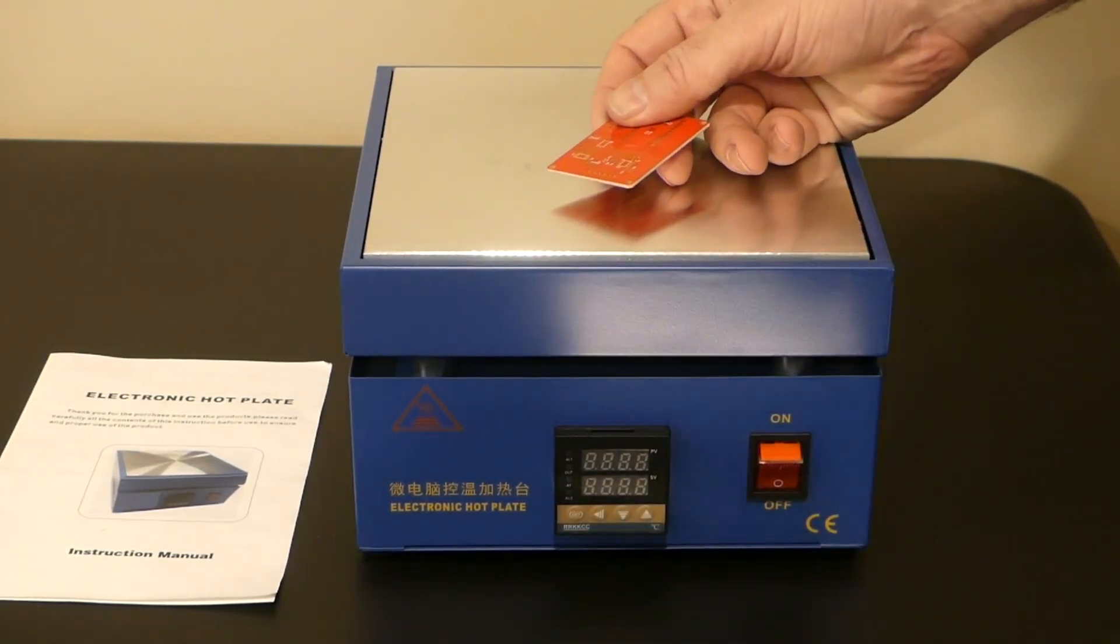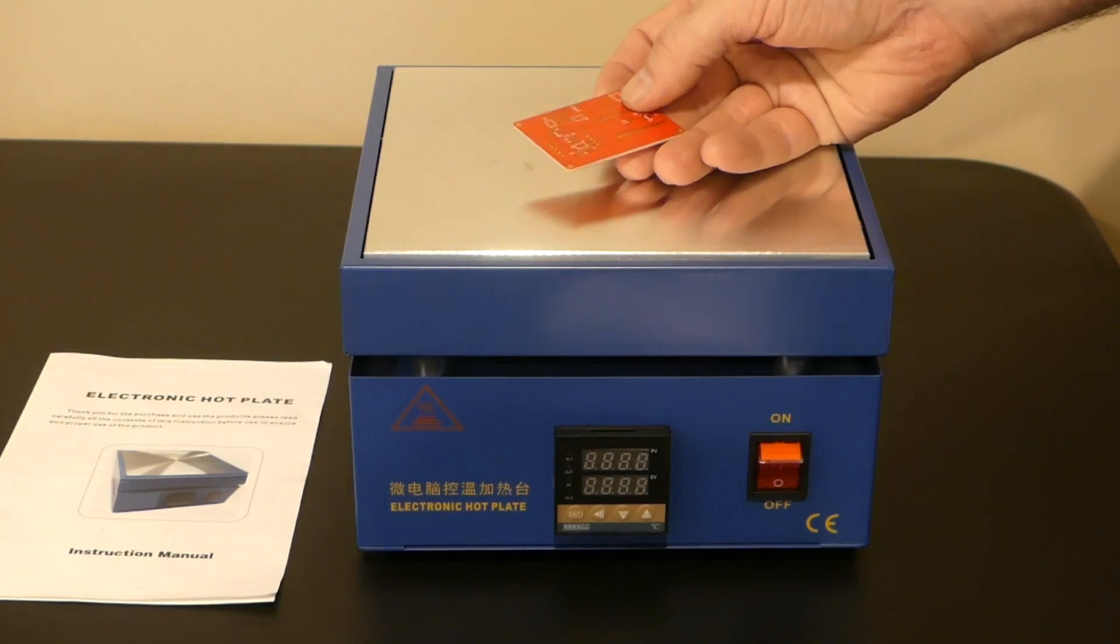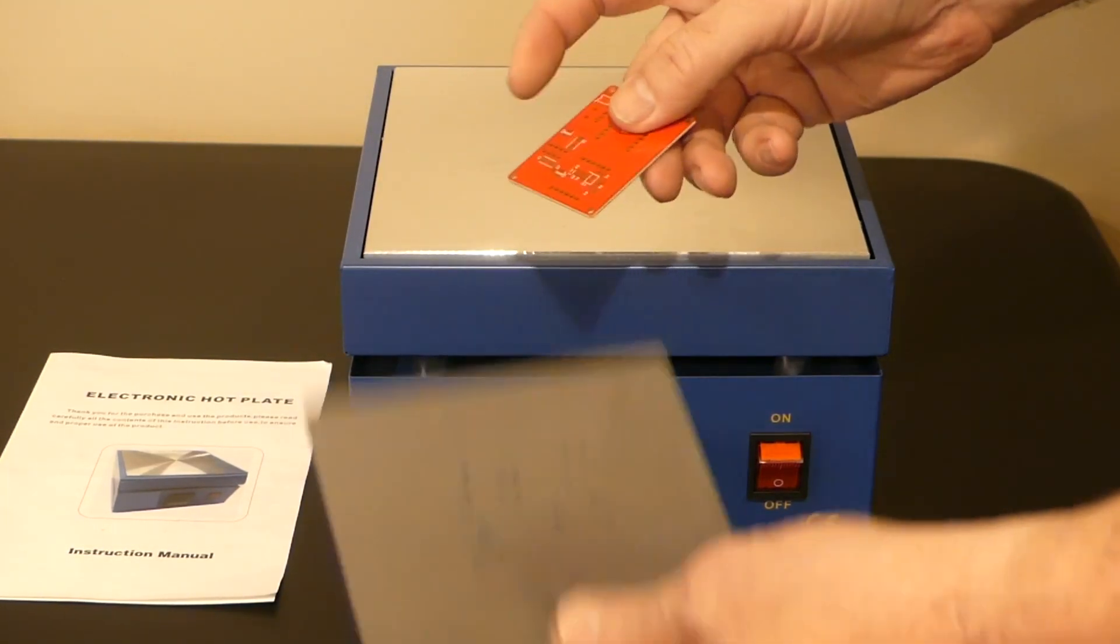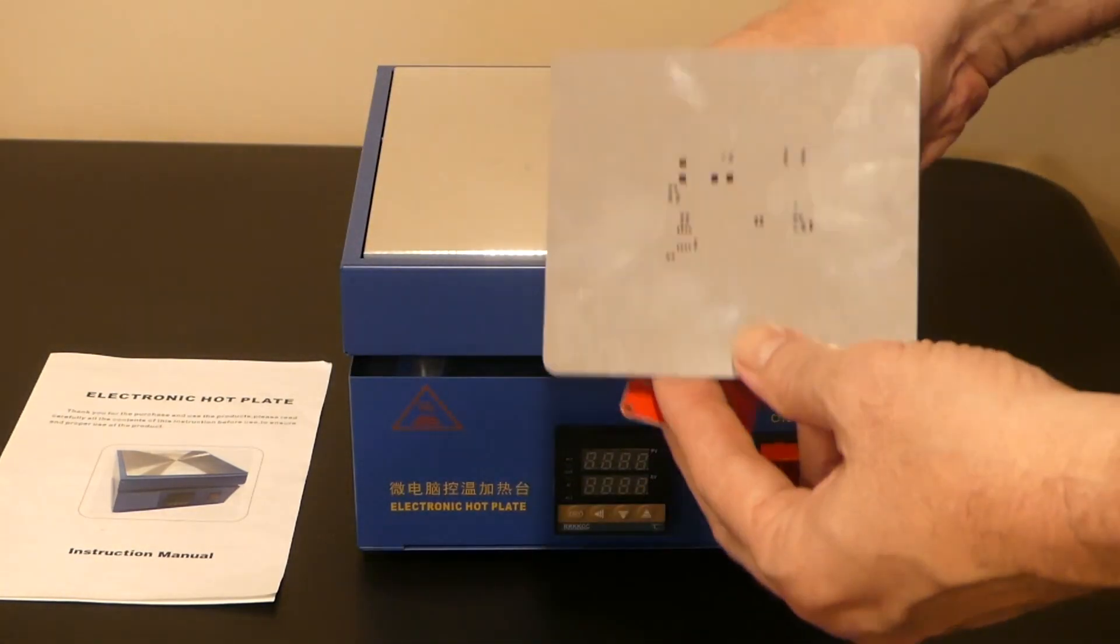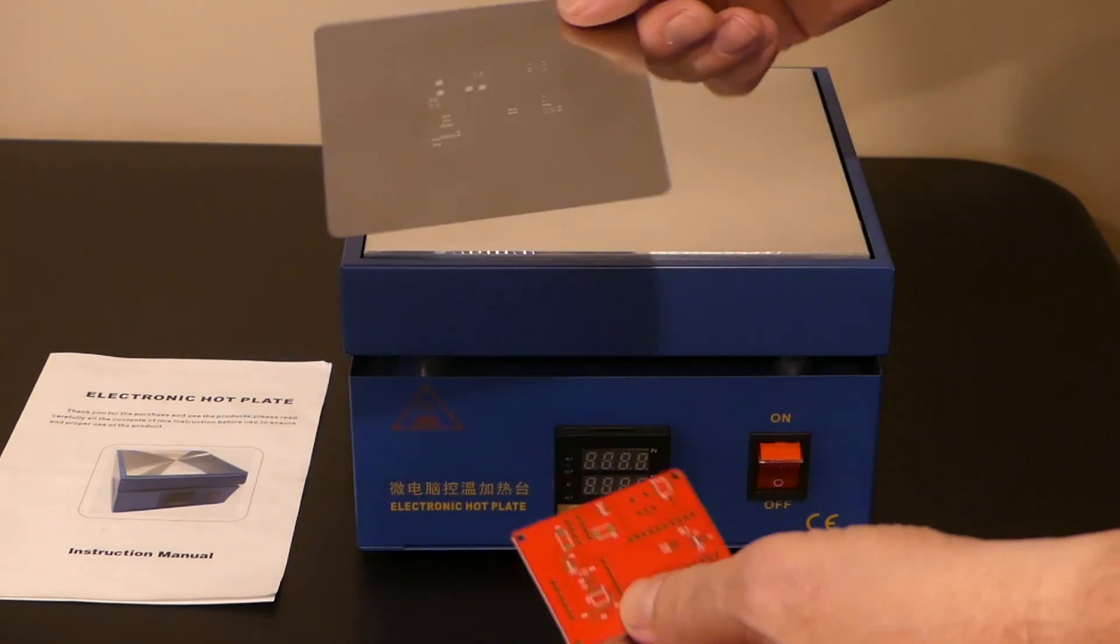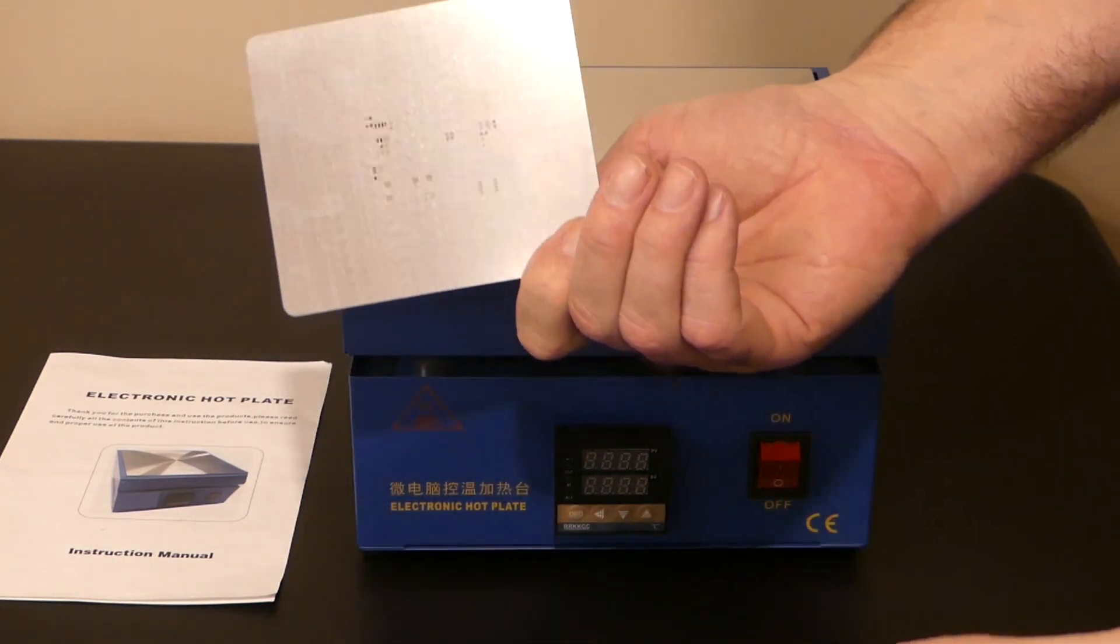So if you want to make your own surface mount PCB boards at home, all you really need is this hot plate, your surface mount design, and when you order your design from the board house, you want to order a template or a stencil. And the stencil is actually for the surface mount components.